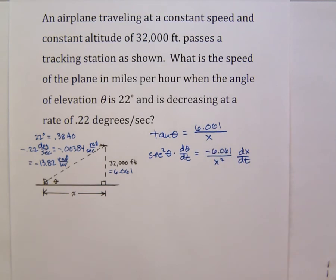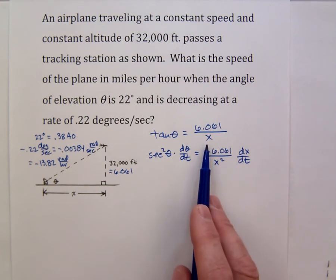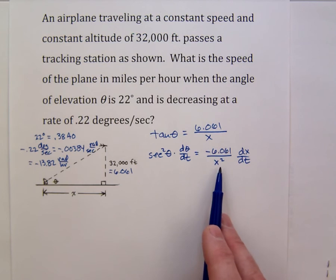Similarly on the right side there's a temptation sometimes to treat these as quotients but it's more convenient if you treat them as powers. This is 6.061 x to the negative 1. Its derivative is going to be negative 6.061 x to the negative 2 and then times dx dt.